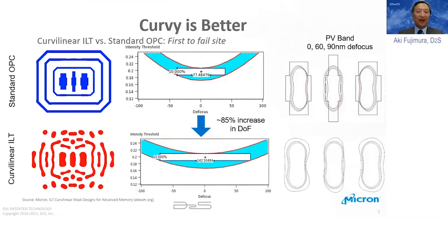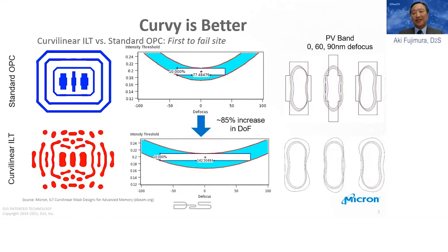Why is it better for the wafer? It's been documented for a long time. This is a recent result that Ezekiel Russell talked about at an EDM initiative event from Micron, comparing standard OPC versus curved linear ILT, which produced an 85% increase in depth of focus. There are many other studies like this. It's universally understood that curved linear shapes on the mask are better for wafer quality and resilience to manufacturing variation.